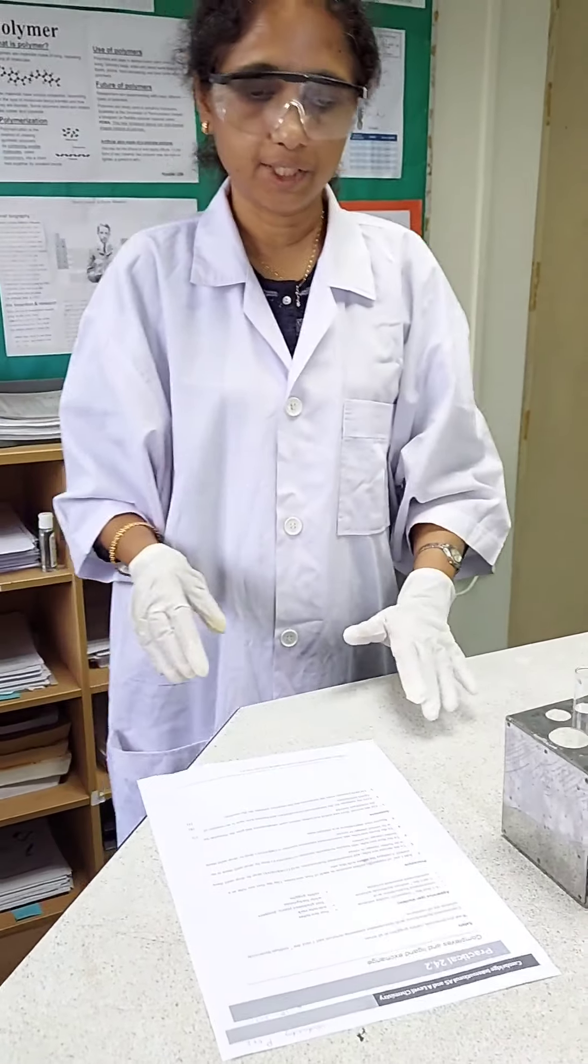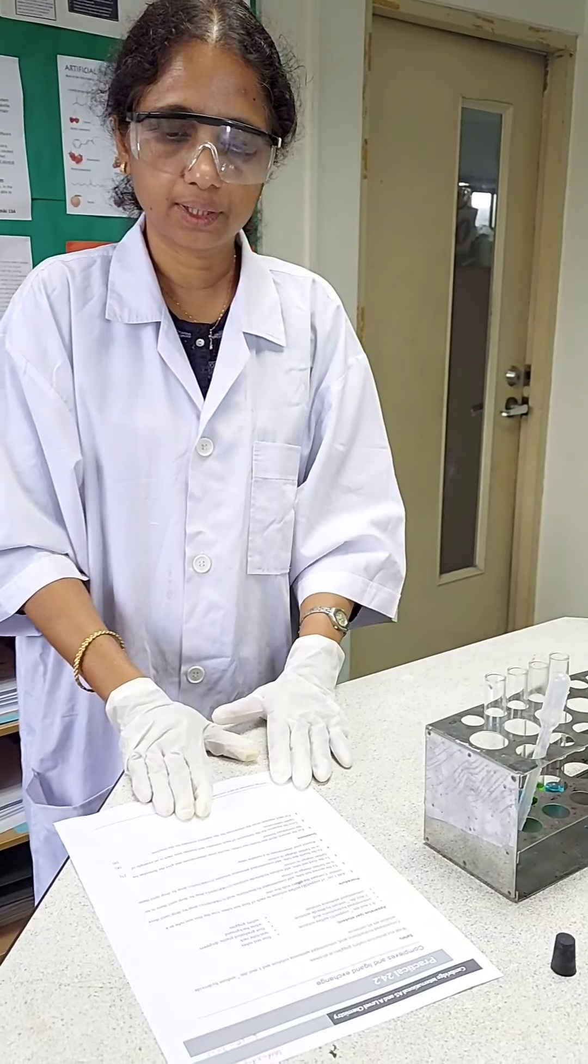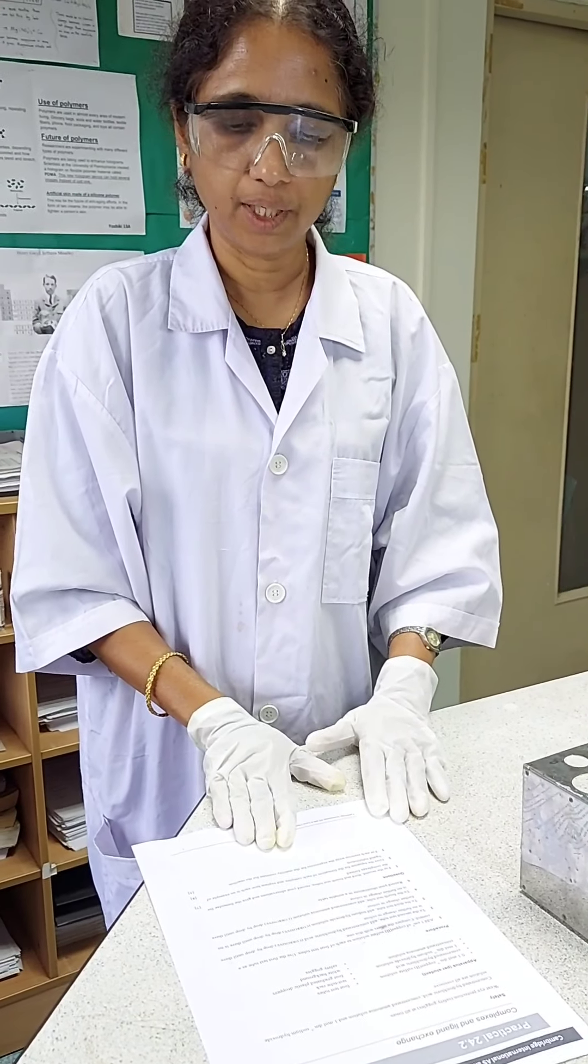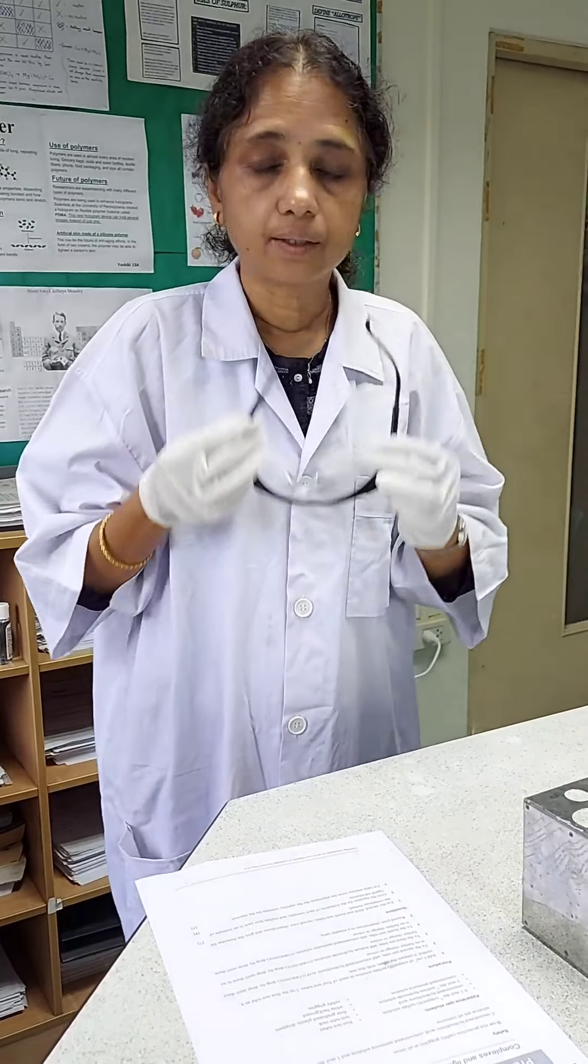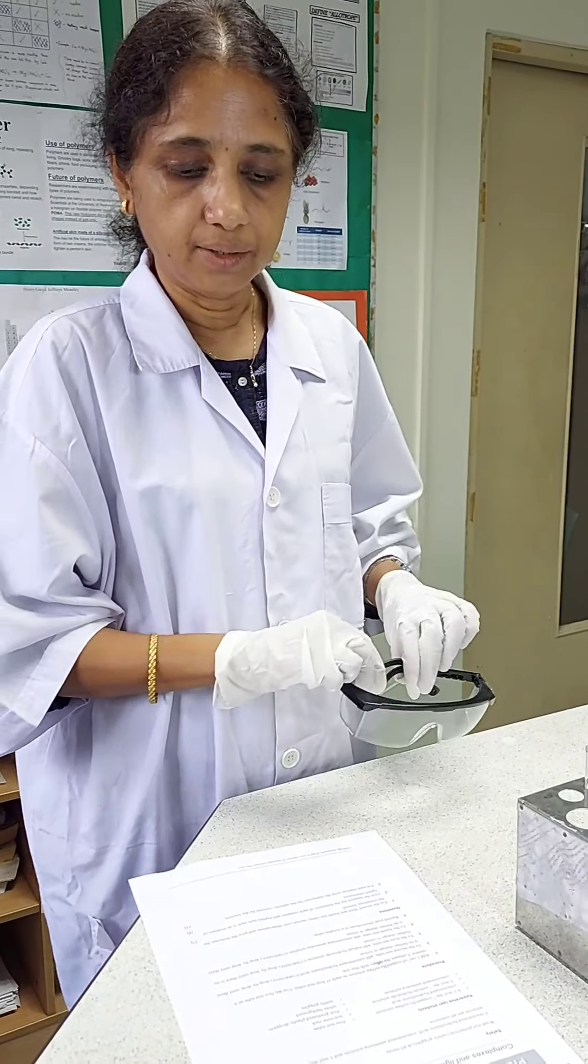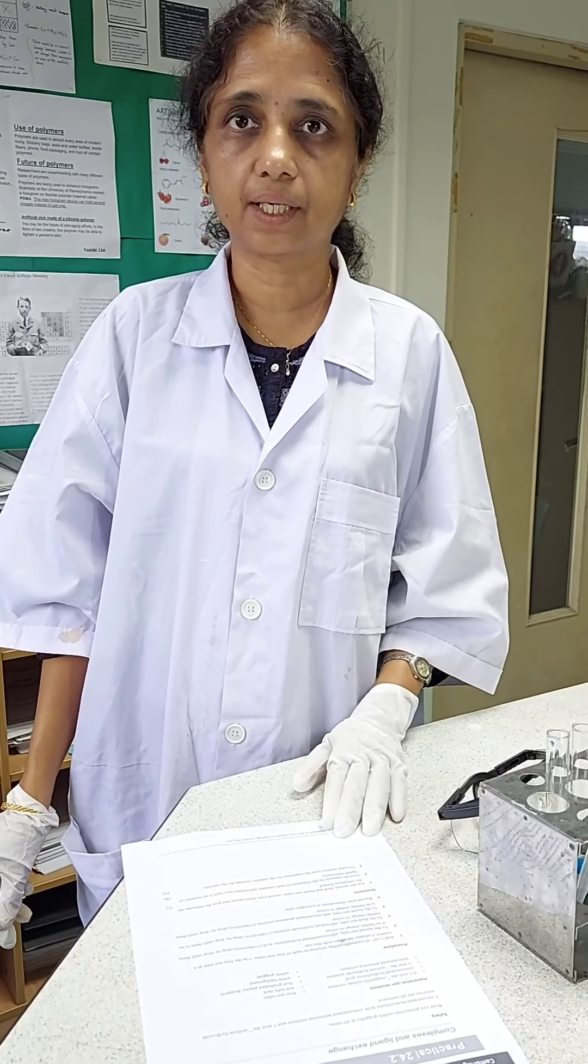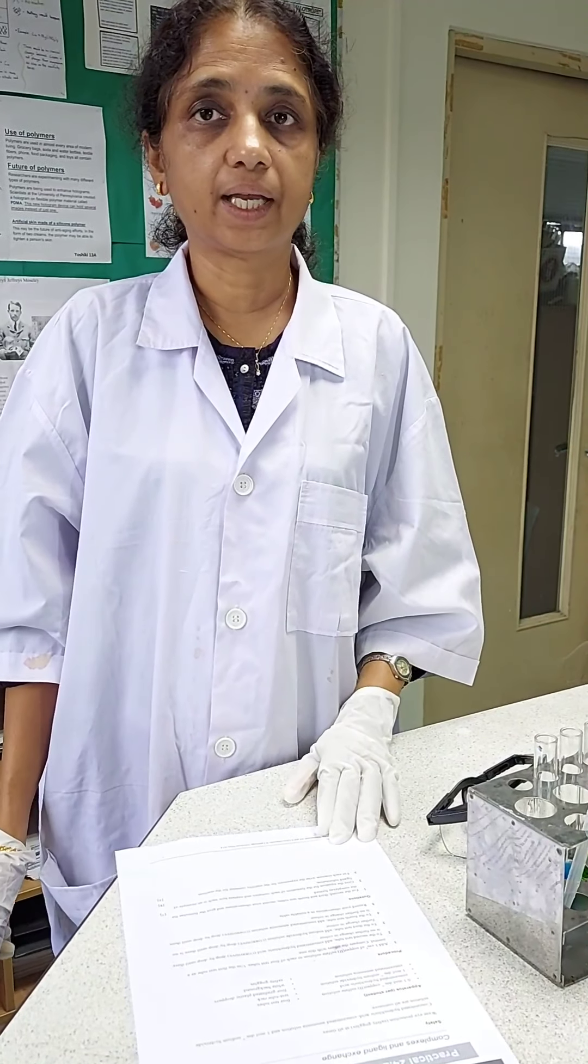Now to the questions. For the second, third and fourth test tubes, record your observations and give the formulae for the complexes formed. Second question, give the equation for the formation of each complex and explain how each is an example of ligand substitution.